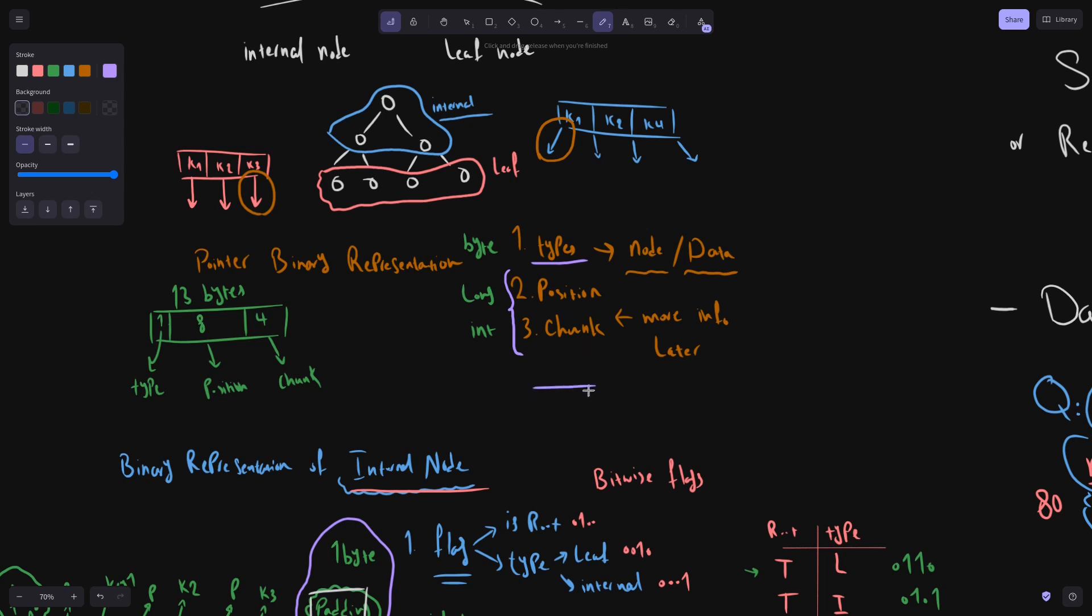The next two elements of a pointer are position and chunk. Right now, our example is using a single index file. But in case each file has a maximum size, let's say 100 megabytes, we may have to create multiple files to store a full B plus tree. In such cases, each of the files that is used for a single tree is called chunk. And we have chunks 0, 1, 2, and goes on. We will discuss the benefit of creating multiple chunks in next videos.